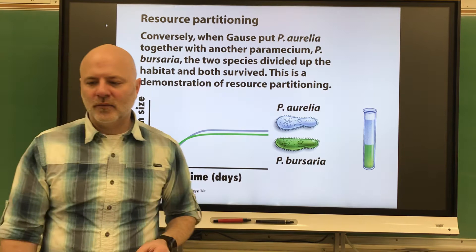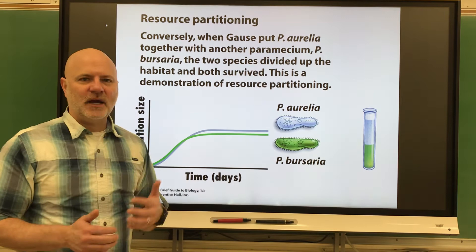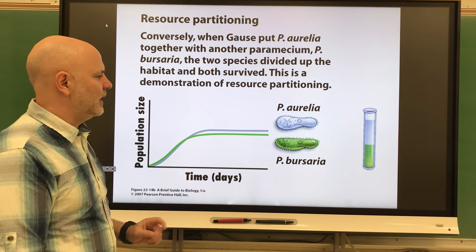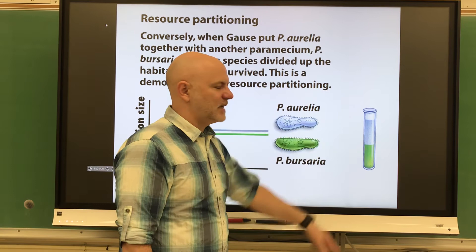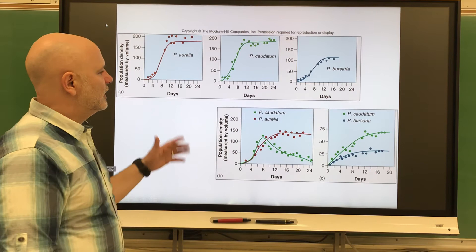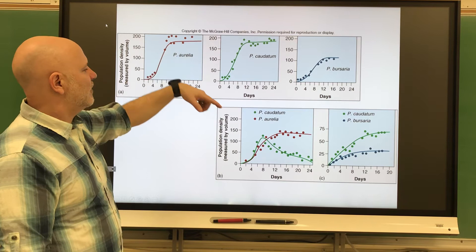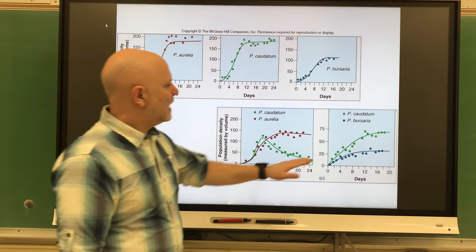This is resource partitioning, where species live in the same habitat but coexist by subdividing the available resources among them — they literally subdivide the niche. With Paramecium aurelia and Paramecium bursaria, in the absence of competitors each takes up the whole test tube. But when together, aurelia occupies the top part and bursaria the bottom. The total population size of each is lower with a competitor than without one.